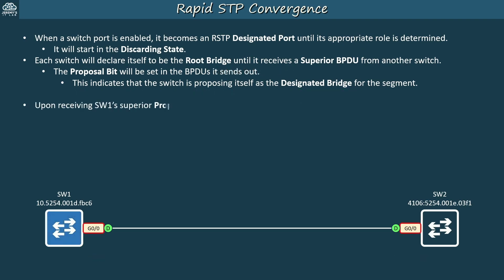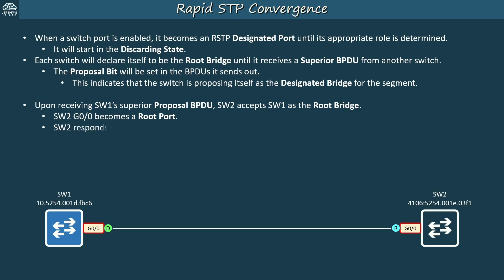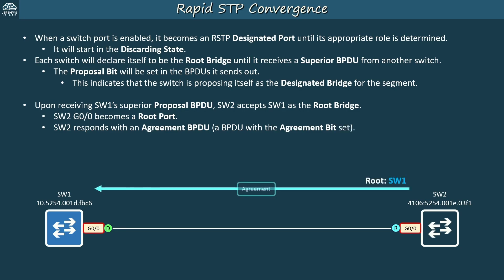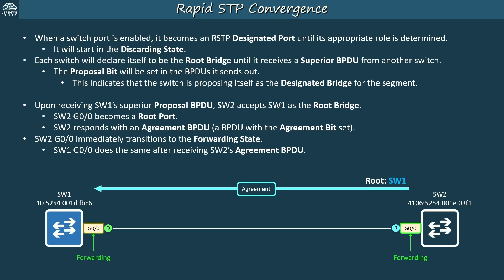Upon receiving SW1's proposal BPDU, SW2 accepts SW1 as the root bridge. SW1 ignores SW2's proposal because it is inferior. So SW2 G0/0 becomes a root port. SW2 then responds with an agreement BPDU — a BPDU with the agreement bit set. Root ports normally don't send BPDUs, only designated ports do, but this is an exception. Thanks to this proposal-agreement exchange, SW2 G0/0 immediately transitions to the forwarding state, and SW1 G0/0 does the same after receiving SW2's agreement BPDU. The RSTP sync process is complete — all of this occurs in less than a second, quite an improvement over STP's 30-second process.